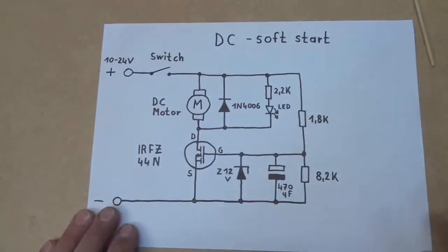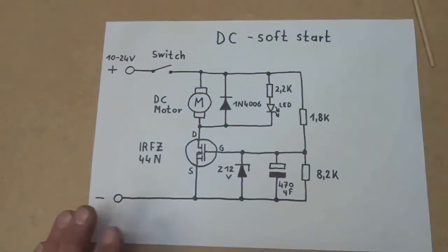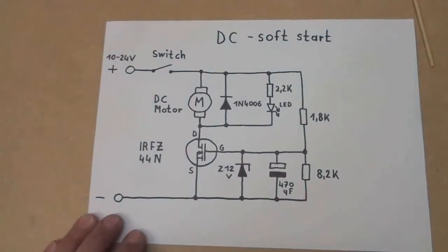Okay guys, so here is a very simple circuit on request of some of you. It is again a soft start circuit, but this time it is for DC loads like DC motors, coils, lamps, or any kind of DC load.